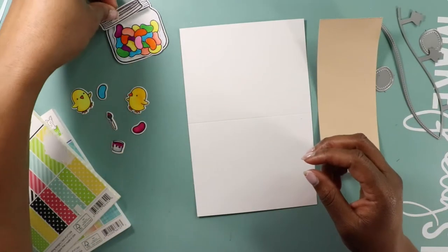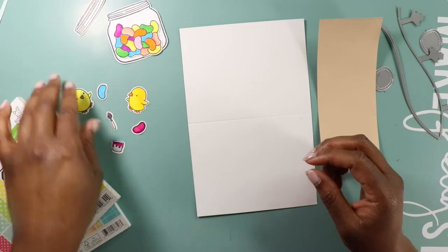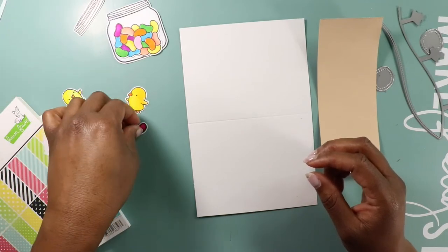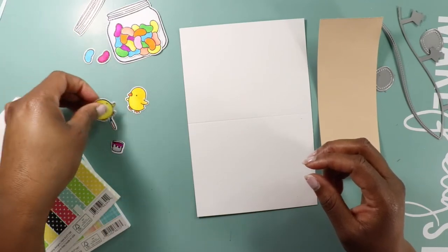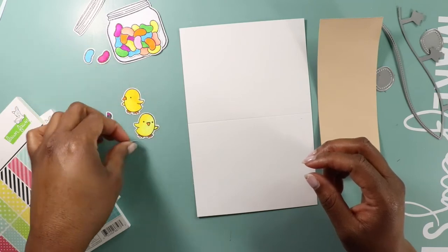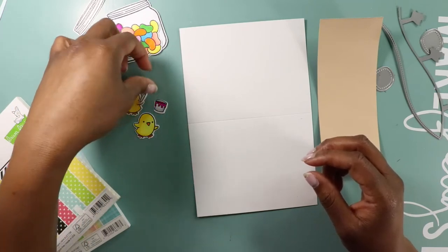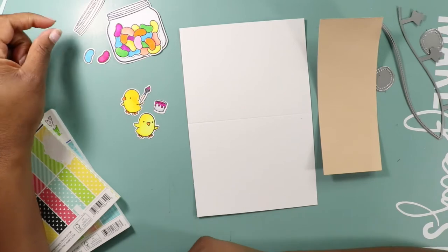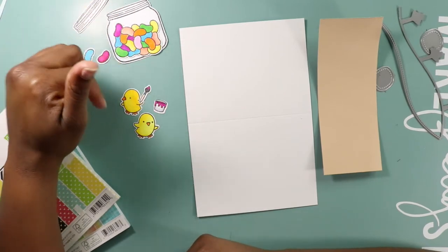Then we have our little beans and then we have these chickens and their paint bucket and a paintbrush. I'm gonna make it look like they are painting the jelly beans. I thought that'd be cute.